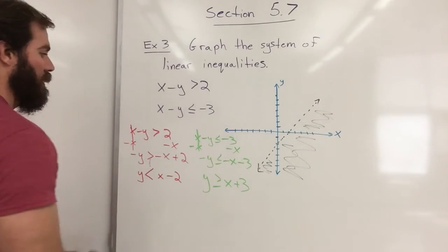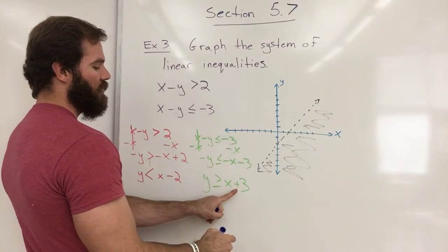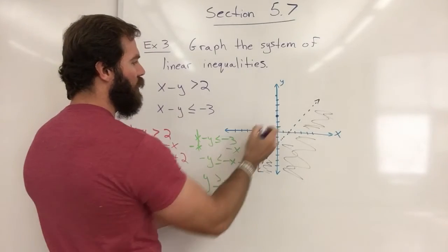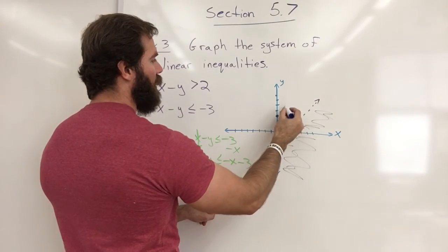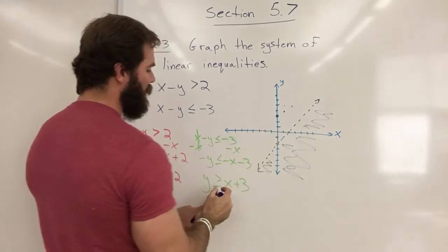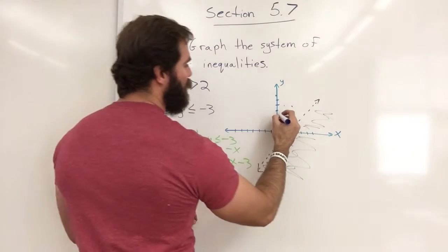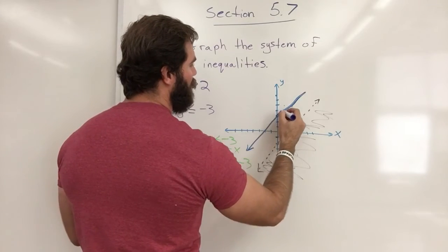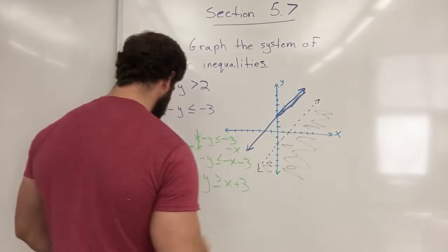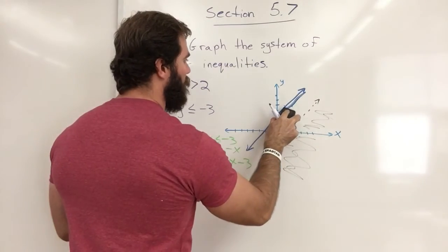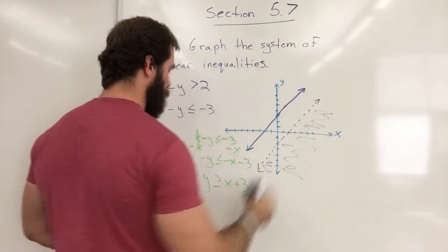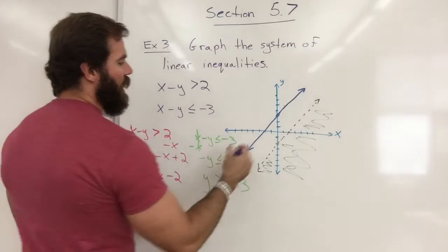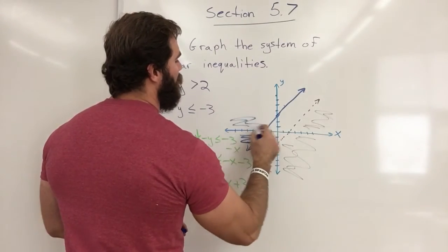Next this one crosses the y-axis at 3 with the slope of 1 up 1 over 1 and it does say that it is equal to it so this line is actually going to be a straight line. And it says greater than so everything shaded above the line.